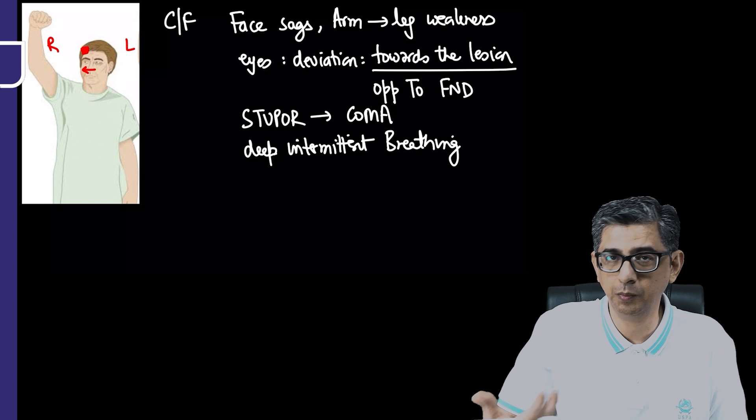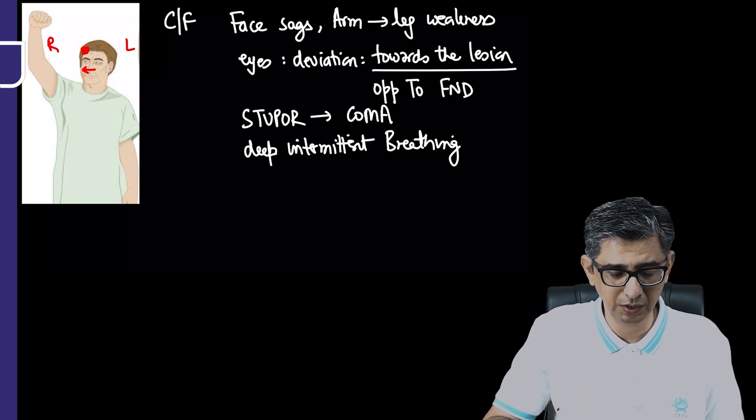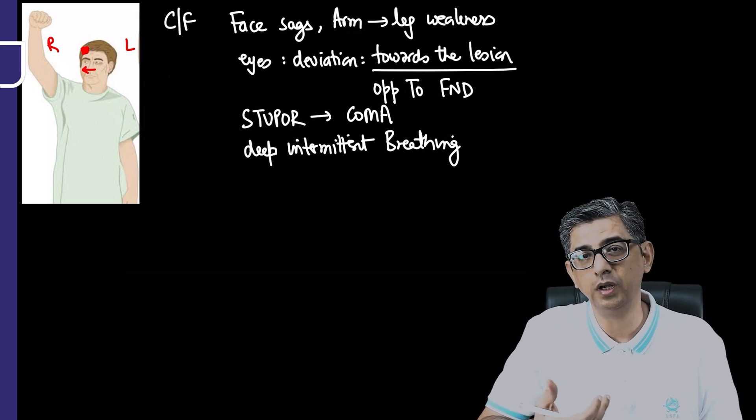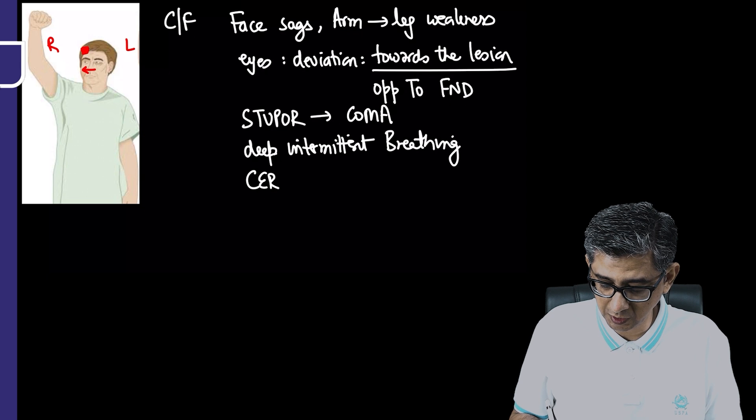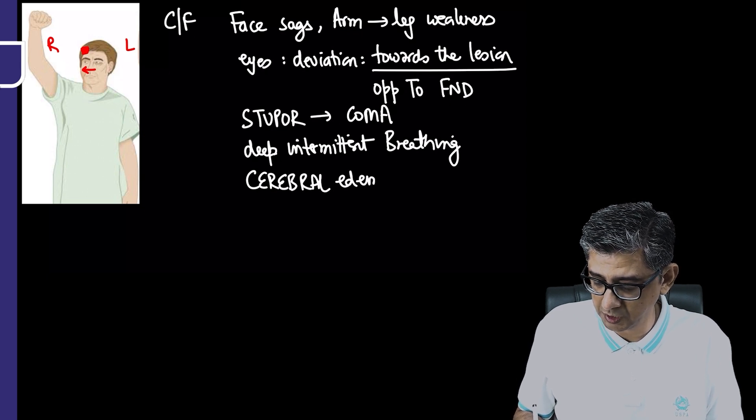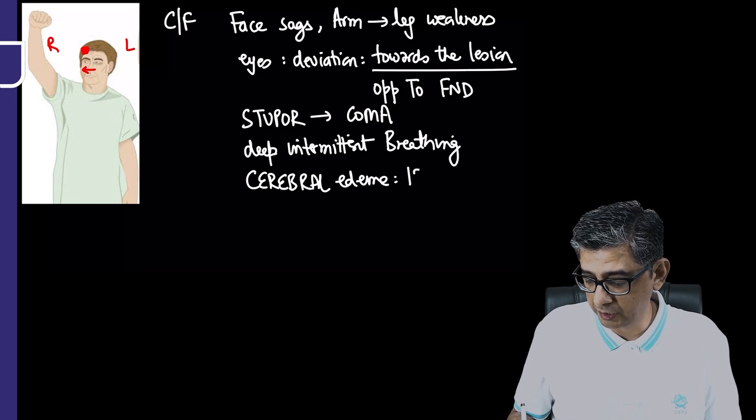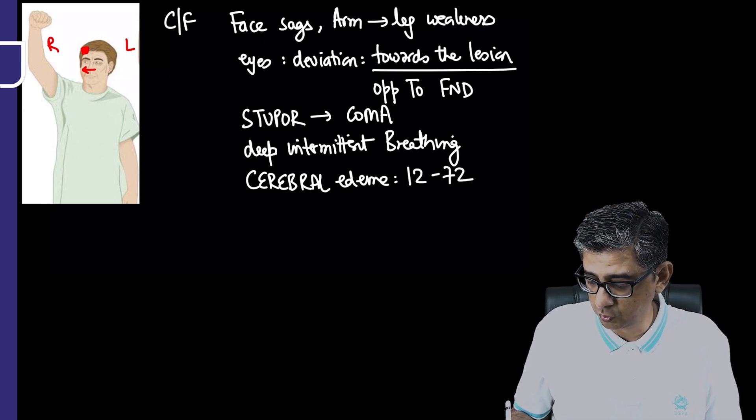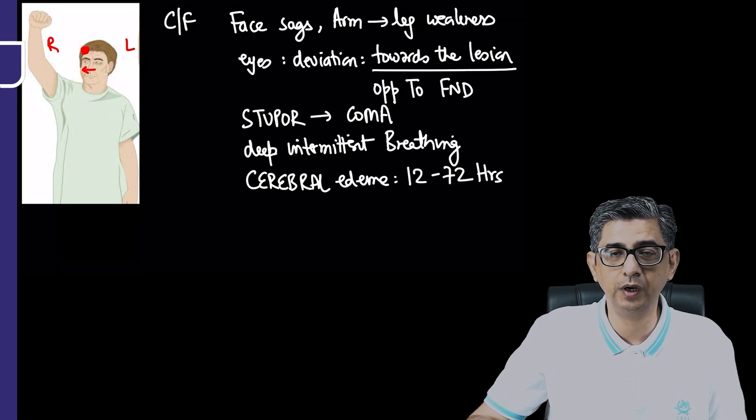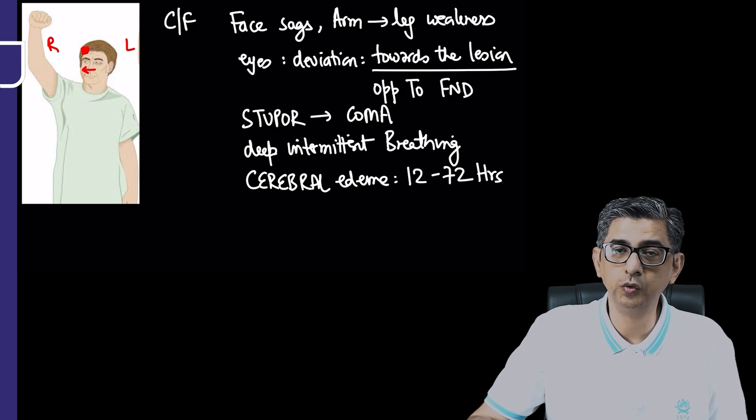Cheyne-Stokes is periodic hypoventilation, then apneic episodes, then hyperventilation. Biot's breathing is irregularly irregular respiration. The cerebral edema accompanying the bleed tends to evolve over 12 to 72 hours, so the first three days are critical. Your fight is controlling raised ICP initially.